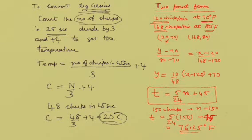So these are actually two points: we have 120 and 70, 168 and 80. Using the two-point form, y minus 70 upon 80 minus 70 is equal to x minus x₁, that is 120, upon 168 minus 120.